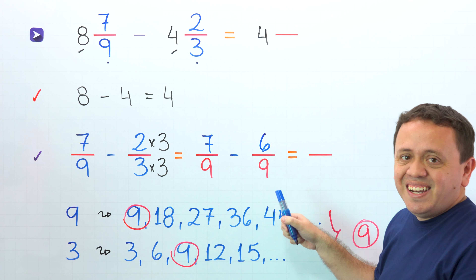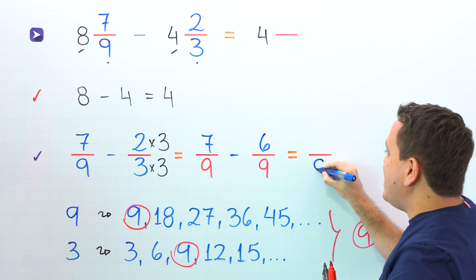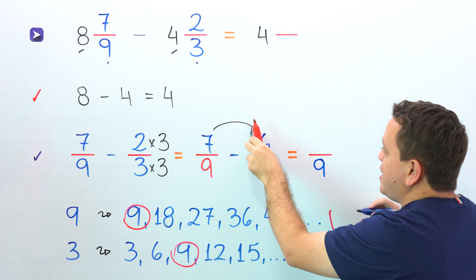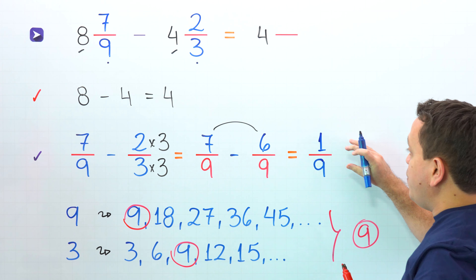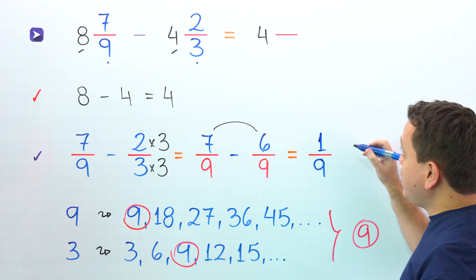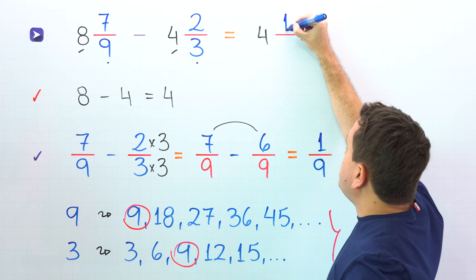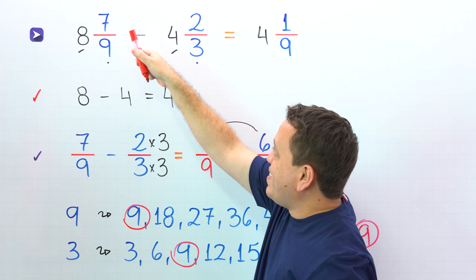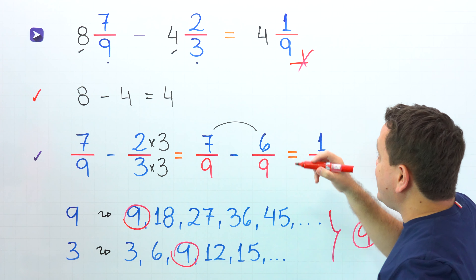These two fractions have the same denominator: 9 on the left, 9 on the right. We continue by subtracting the numerators, and 7 minus 6 gives us 1. The difference of the fractions is 1 ninth. Finally, we add the difference of the fractions to the difference of the whole numbers, so we put 1 ninth next to 4. In that way, 8 and 7 ninths minus 4 and 2 thirds gives us 4 and 1 ninth.